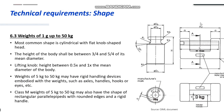For weights of one gram up to 50 kilograms, the most common shape is the cylindrical with a flat knob-shaped head. The height of the body shall be between three-quarters and five-quarters of its mean diameter. Looking at the appendix in the document, we can find the figure showing examples for weights such as one kilogram, a few hundred grams, or 10 grams — this kind of flat knob head cylinder. They can also have a lifting knob, and the height should be between 0.5 and one times the mean diameter of the body.